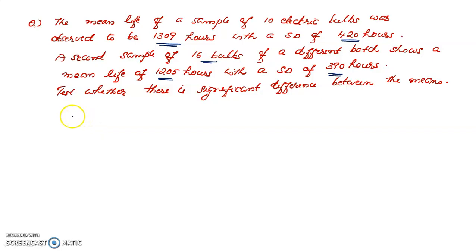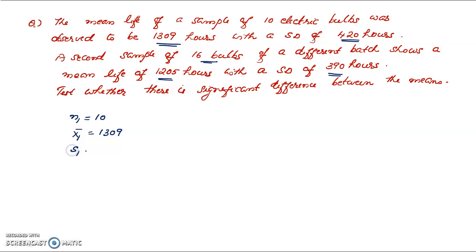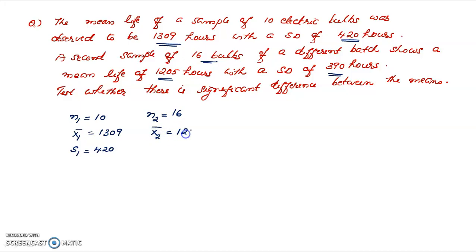Two samples: first sample n1 is equal to 10 bulbs, with mean x1 bar and standard deviation s1. Second sample n2 is equal to 16 bulbs, with mean x2 bar equal to 1205 hours, and standard deviation s2 equal to 390 hours. This is the given information.